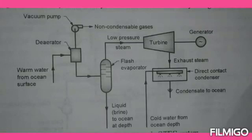That low pressure steam is passed through the turbine where expansion of the steam takes place. After expansion, mechanical energy is generated, which is converted into electrical energy in the generator. The exhaust steam is then supplied to a direct contact type condenser, where it is cooled by cold water from the ocean depth. When the cold water and exhaust steam come into contact with each other, the exhaust steam gets condensed and the condensate is released back to the ocean.